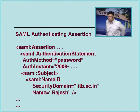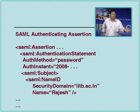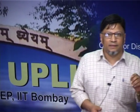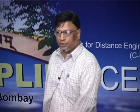An authentication assertion says: I have authenticated this particular subject. You need two different parties - the asserting party who is asserting on your behalf, and the subject or principal. The asserting party says it has authenticated the principal using a password mechanism at a specific time, and includes information about the subject - for example the subject's name is Rajesh and the security domain is IITB. This assertion is inserted into the SOAP body.